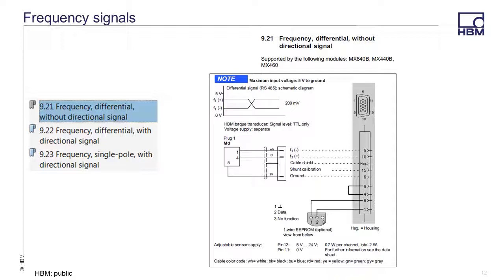Depending on the type of frequency output your sensor has, there are three different wiring configurations. The first one shown here is for a differential frequency signal. This is typical for the frequency torque signal from many HBM torque sensors.